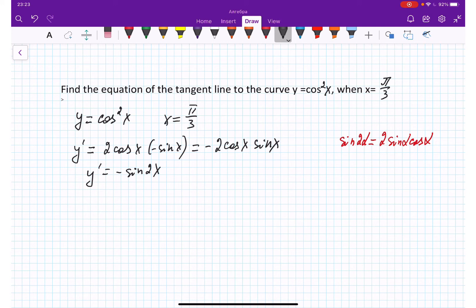Once we have it here, we plug the value of our x, which is equal to pi over 3. Therefore y prime is going to equal negative sine 2 times pi over 3, and we're going to be plugging this value of x.